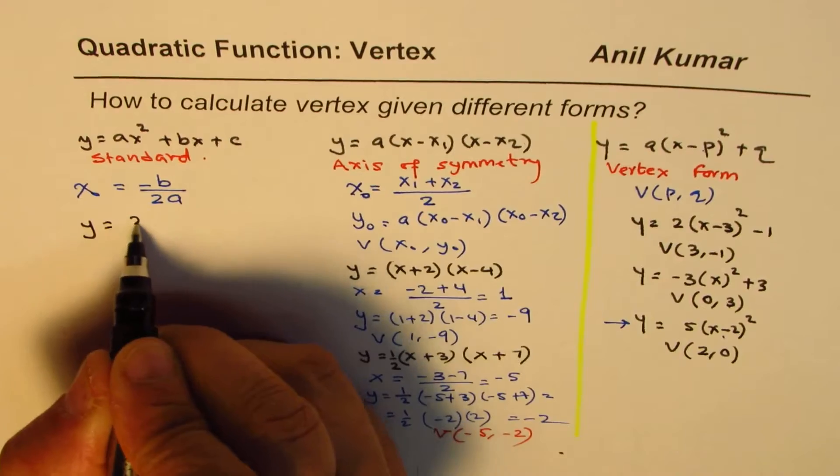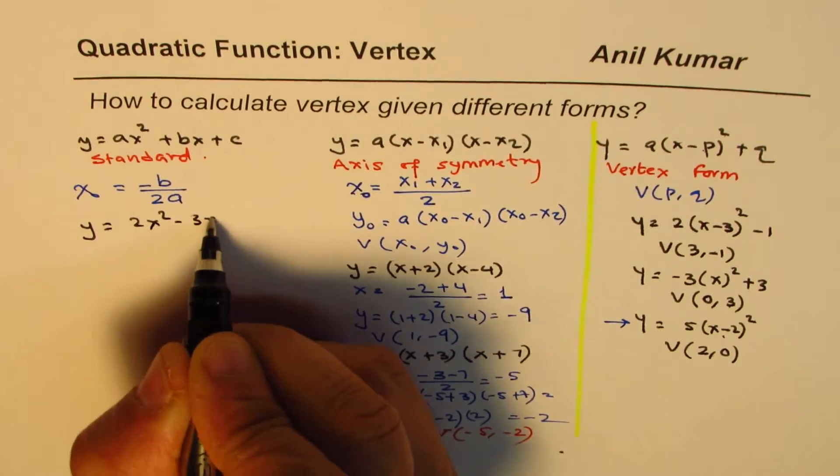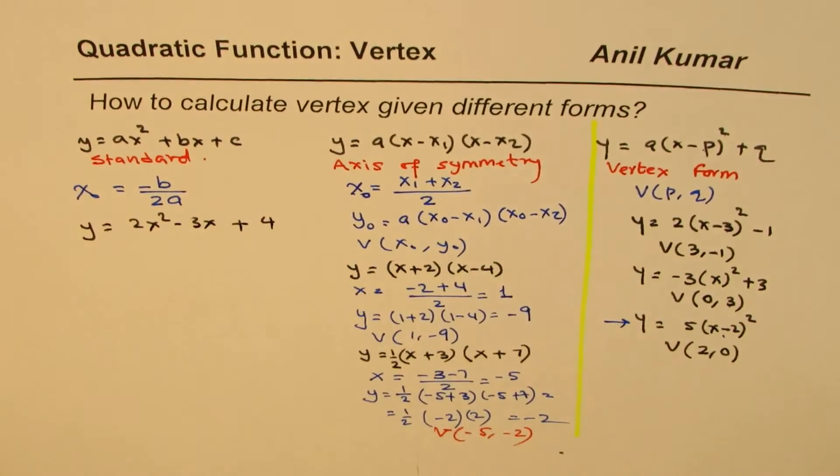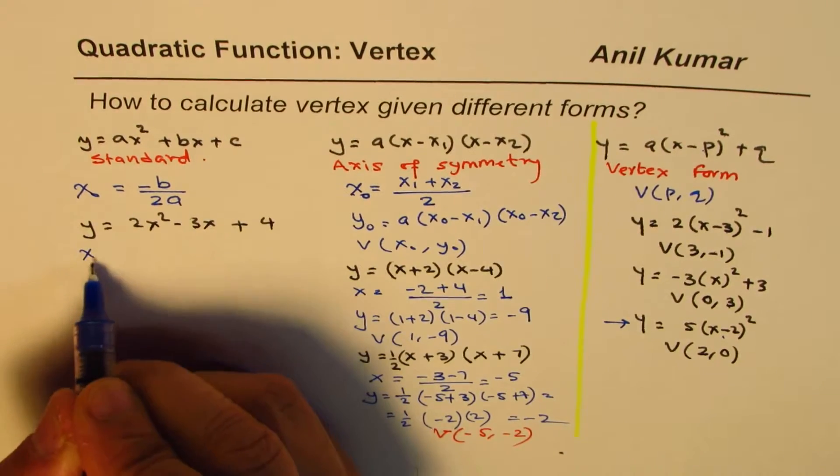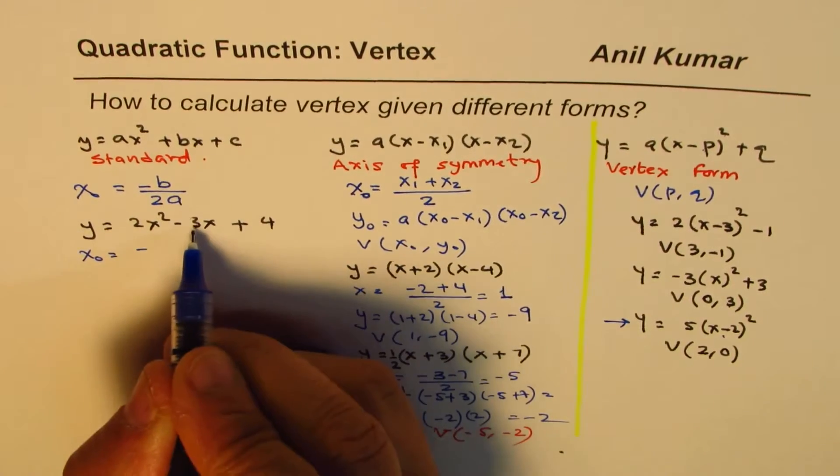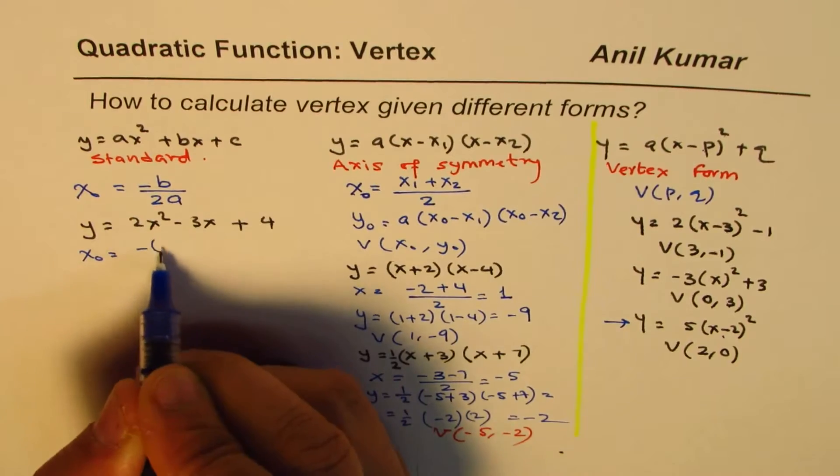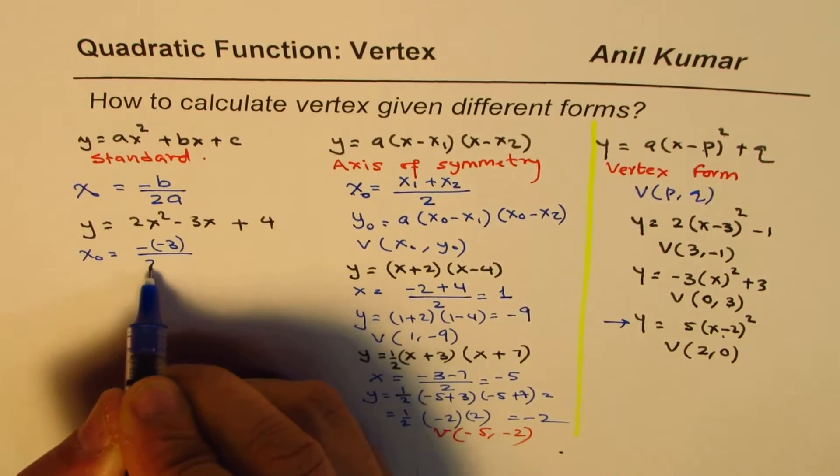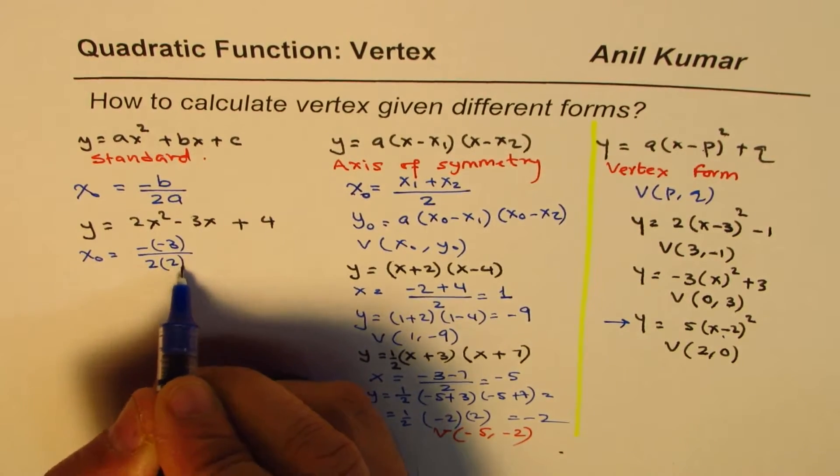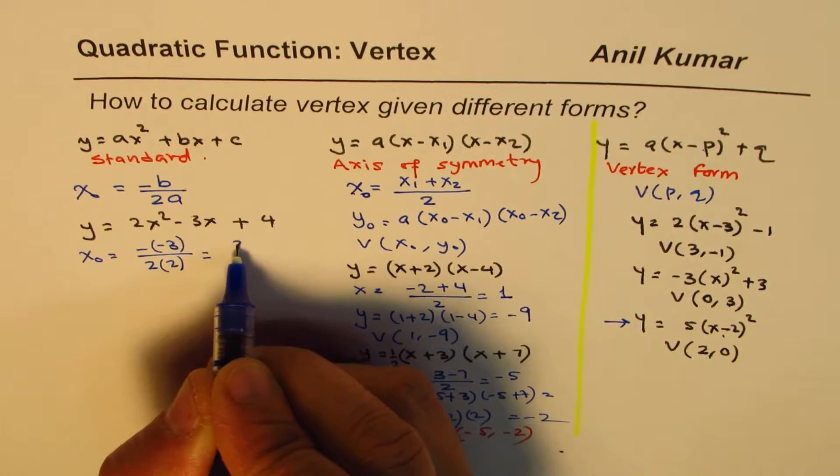So let's take a few examples here. We could have y equals 2x² minus 3x plus 4. So x value will be equal to minus b means minus of minus 3. Let me write here times 2, times a which is 2 times 2. And so what we get here is 3 over 4.